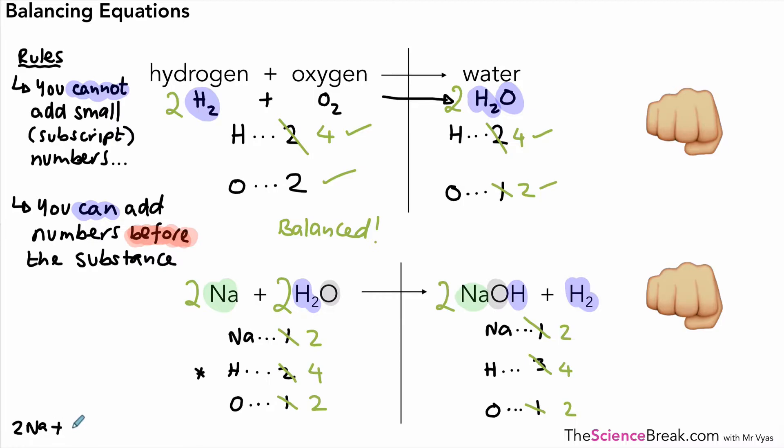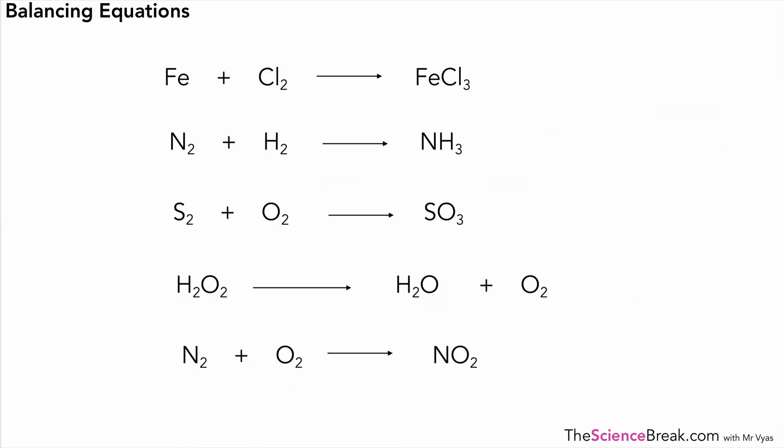Let's just quickly write out our balanced formula equation for that reaction. Nice and neatly below without all the colors. There it is. 2Na plus 2H2O gives us 2NaOH plus H2. Okay, so that's our balanced formula equation. Let's have a go at a few of these ourselves. Remember, it's all about practice.